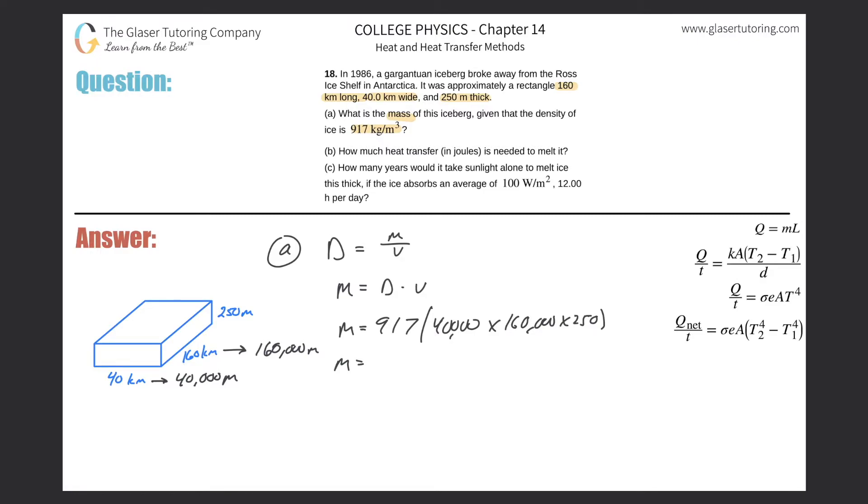Sorry for the noise. Just have to open up the calculator. So 917 times 40,000 times 160,000 times 250. And this is now going to be 1.47 times 10 to the 15th kilograms.